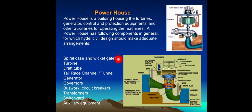Powerhouse components include: spiral case and wicket gates, turbine, shaft, draft tube, tailrace channel and tunnel, generator, governors, bus bar circuit breakers, transformers, switchyard, and auxiliary equipment.